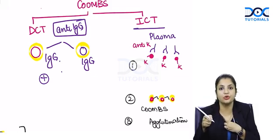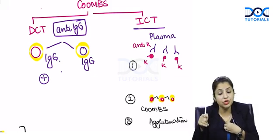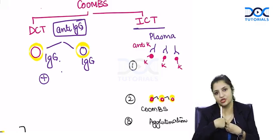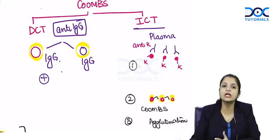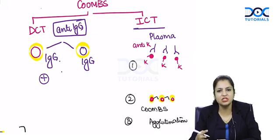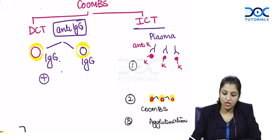The blood bag that you're going to give me has anti-Kel antibody. If you give this blood bag to me, I'm going to get a transfusion reaction - specifically a delayed hemolytic transfusion reaction because it's an IgG antibody. The patient will present with jaundice after 3 to 7 days of transfusion.